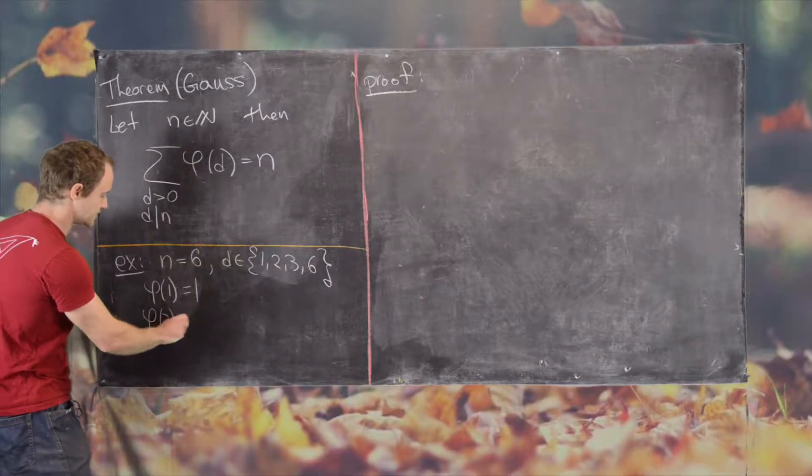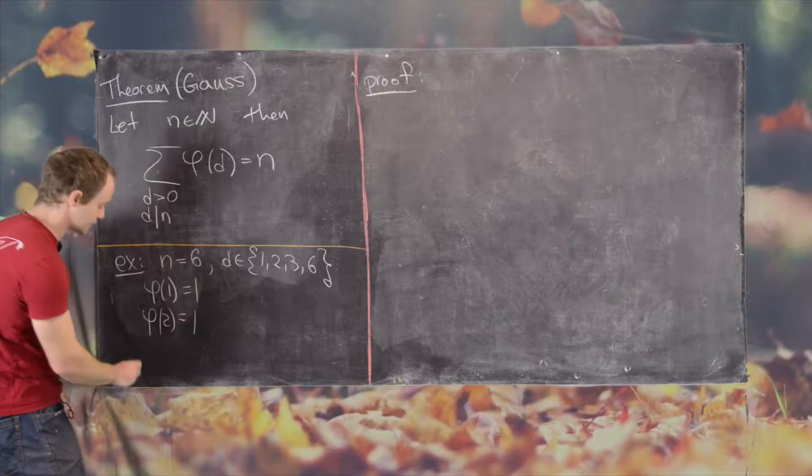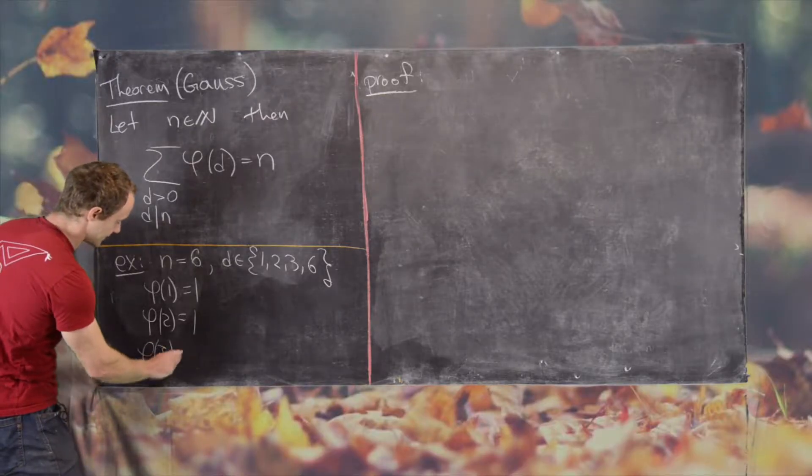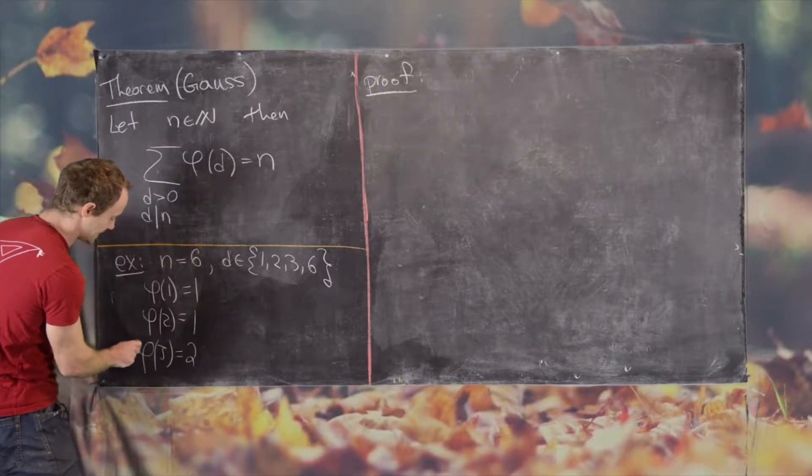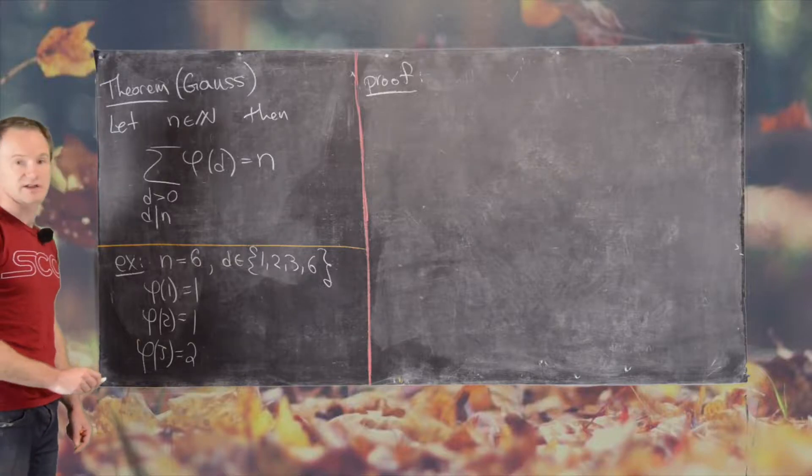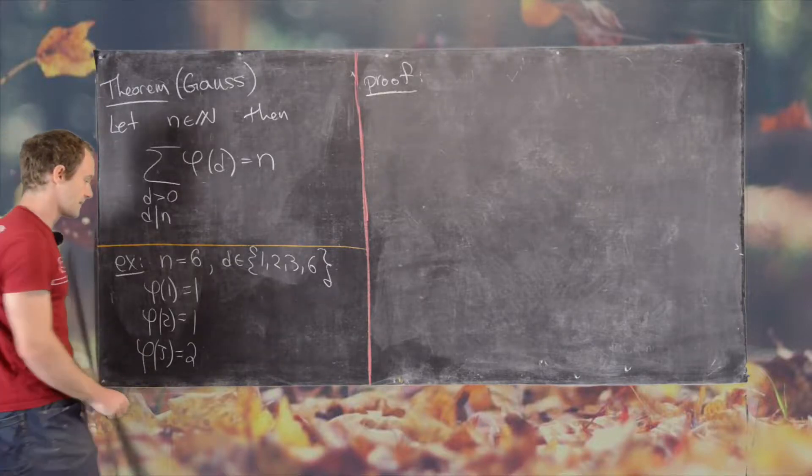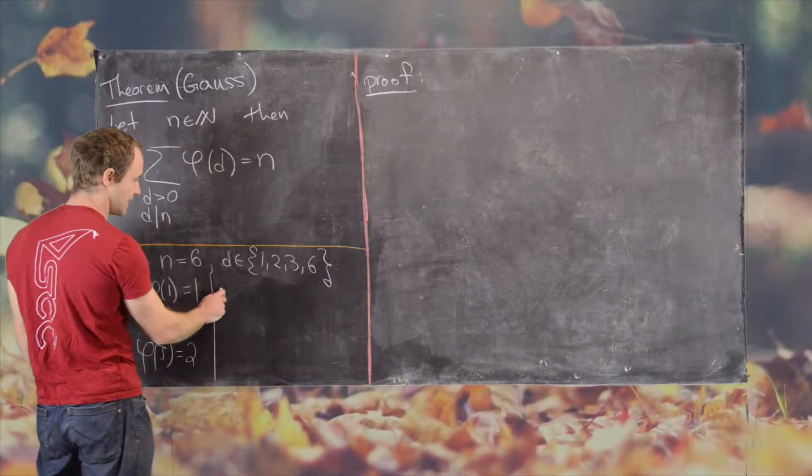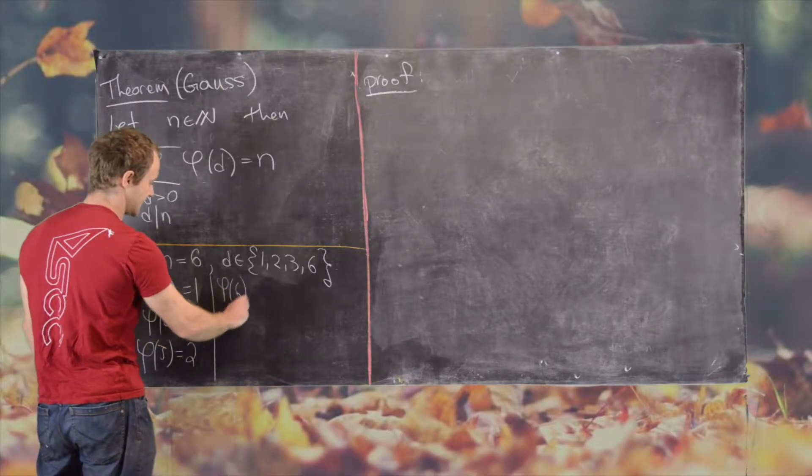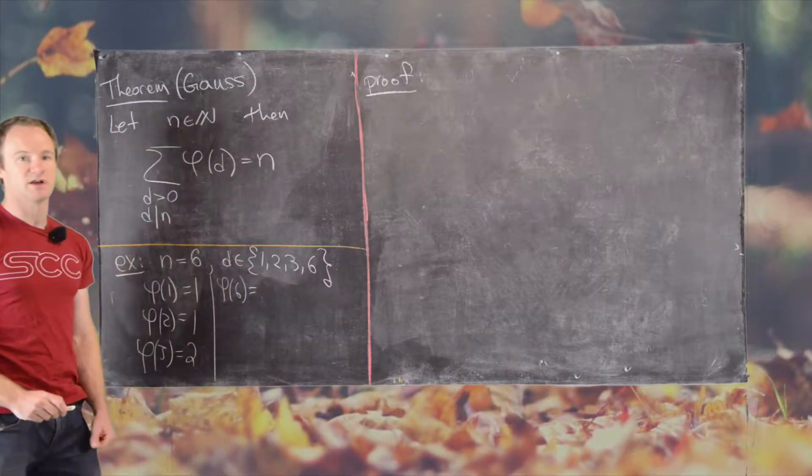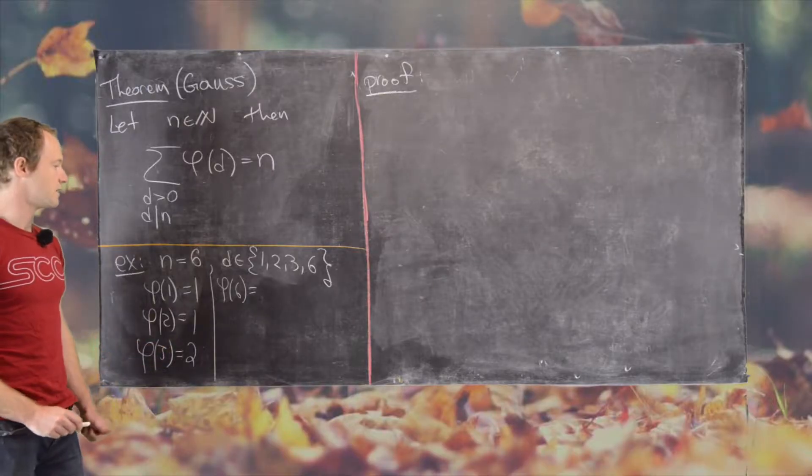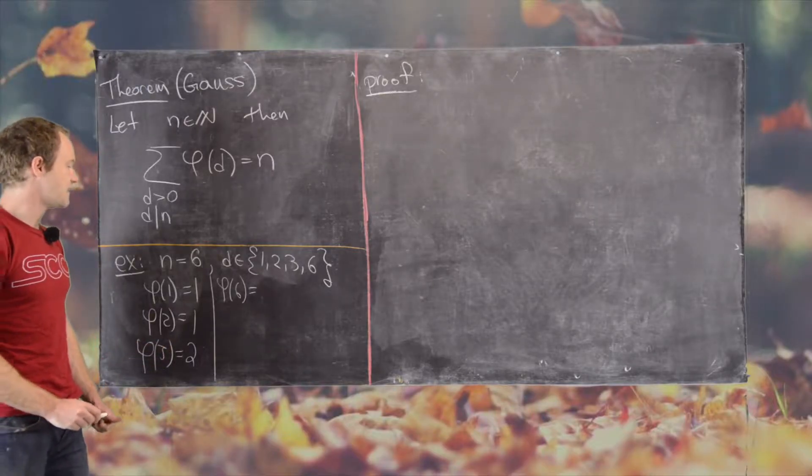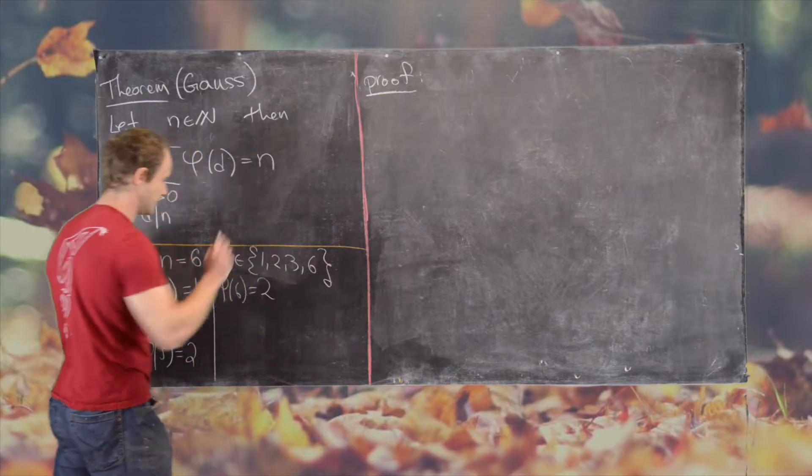And then phi of 2, so that's also equal to 1. Phi of 3, that's equal to 2 because 1 and 2 are relatively prime to 3. And then phi of 6. So in this case, we have 1 and 5. So phi of 6 will be 2.